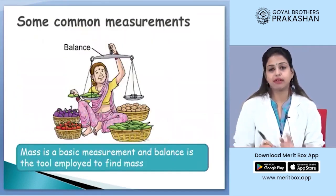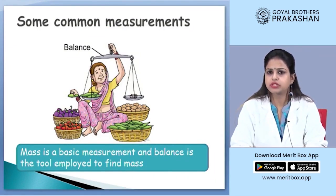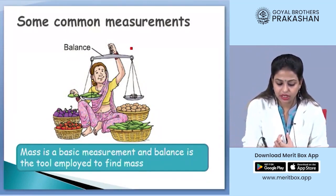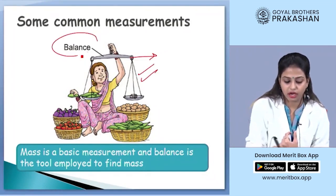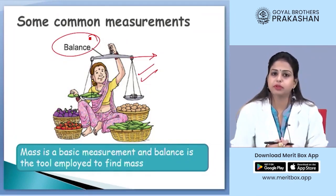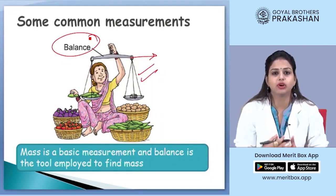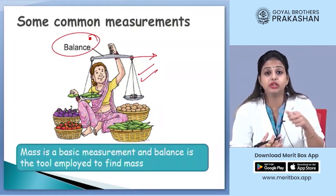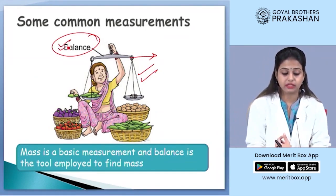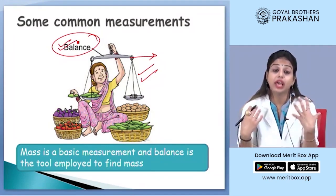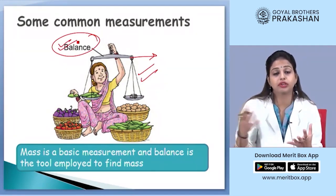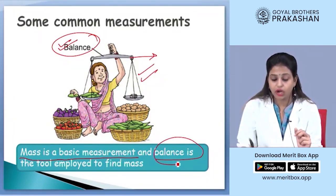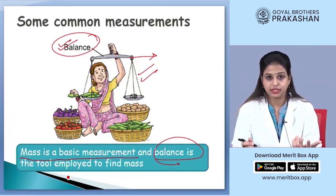Have you ever gone grocery or vegetable shopping with your mother? When you go to the market, vegetable vendors have a balance in their hand. Whenever you go to a vegetable vendor or fruit vendor, you may ask for 1 kg of mangoes or 2 kgs of potatoes — and those vendors measure the weight using a balance. So mass is a basic measurement that we use in daily life, and we use a balance to measure mass.